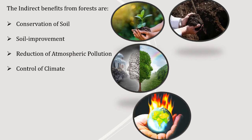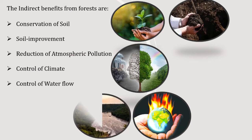Control of climate: transpiration of plants increases the atmospheric humidity, which affects rainfall and cools the temperature. Control of water flow: in the forest, the thick layer of humus acts like a big sponge and soaks rainwater, preventing runoff, thereby preventing flash floods. It also prevents quick evaporation of water, thereby ensuring a supply of water to streams, springs, and wells.